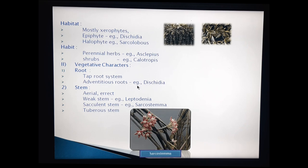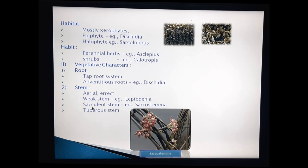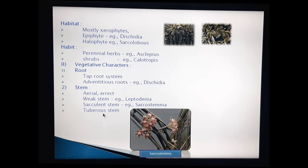Stem characteristics: these plants are aerial, erect, weak stems. But in Leptadenia — commonly known in Telugu as mukkutum murtiga — it has a weak stem. Next, Sarcostemma has a succulent stem. See the picture — that is Sarcostemma, with an appearance like Casuarina. Sarcostemma has a succulent stem.